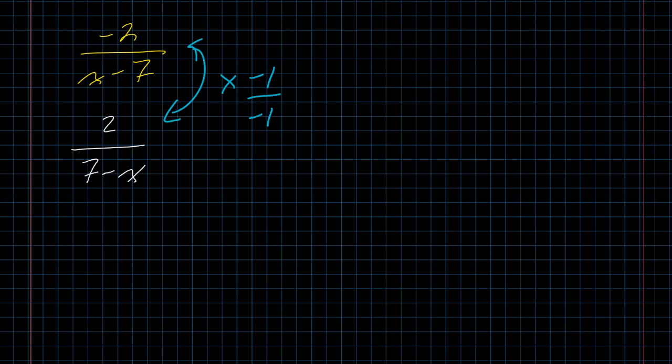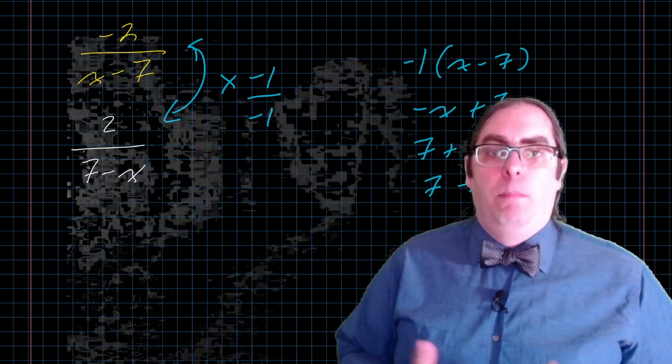If it makes you more comfortable, you can write this out. Negative 1 times x minus 7 is the opposite of x plus 7, which is the same thing as 7 plus the opposite of x, which is the same thing as 7 minus x. I don't think that writing that out is helpful, but if you think it's helpful, go for it. There's nothing wrong with it, certainly.